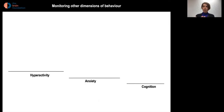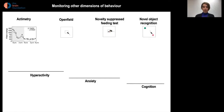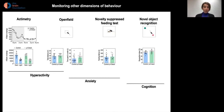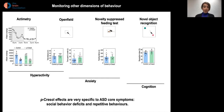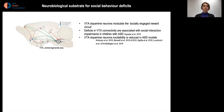We then looked at other behavioral dimensions not part of ASD core symptoms but frequently impacted in ASD patients — hyperactivity, anxiety, and cognition — through another battery of tests. We observed no difference whatsoever between paracresol-treated mice and control mice for these dimensions. This indicates that the effects of paracresol on behavior are very specific to ASD core symptoms: social behavior and repetitive behaviors.